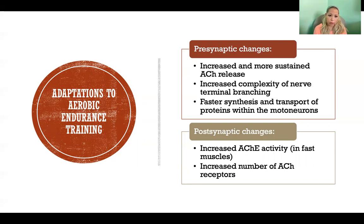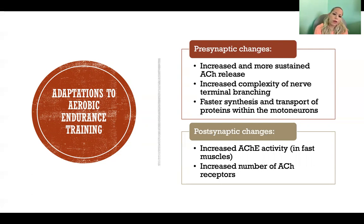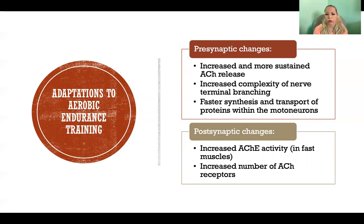Post-synaptic changes — on the muscle side of the synapse — include increased acetylcholinesterase activity in fast muscle. You don't see that adaptation in slower muscle, but in fast muscle we have more acetylcholinesterase, so we're getting rid of acetylcholine a little bit more efficiently. There is also an increased number of acetylcholine receptors, so that the muscle fiber will be more sensitive to the increased secretion of acetylcholine from the motor neuron.